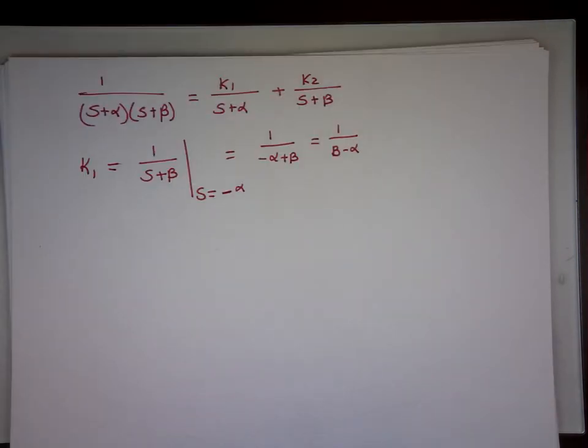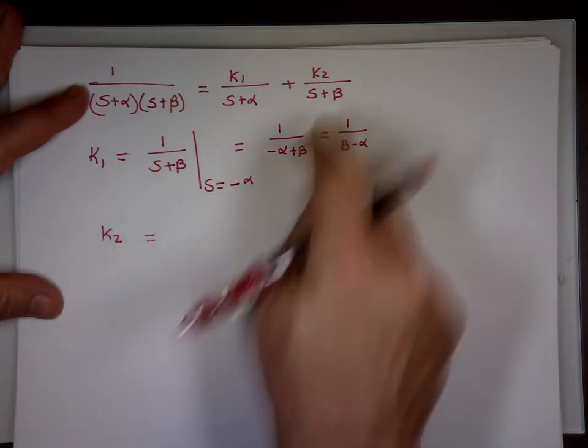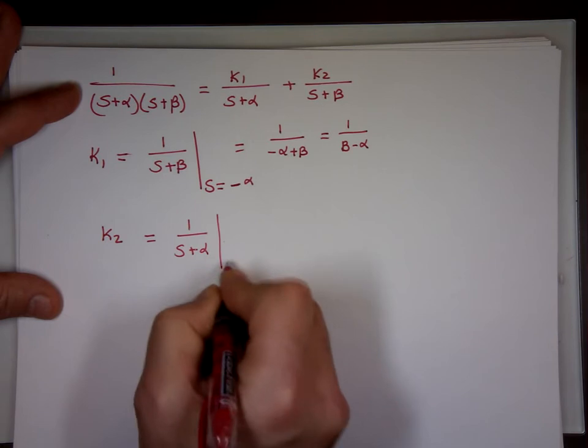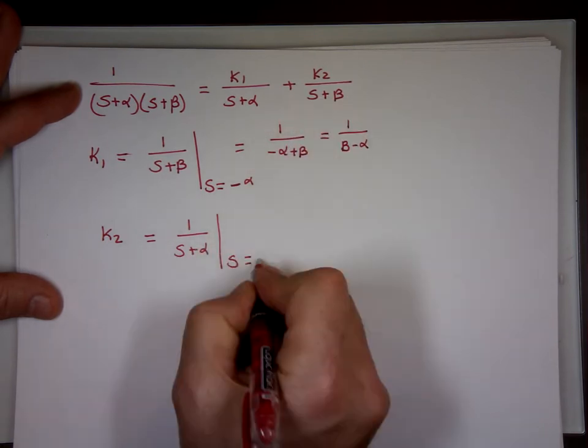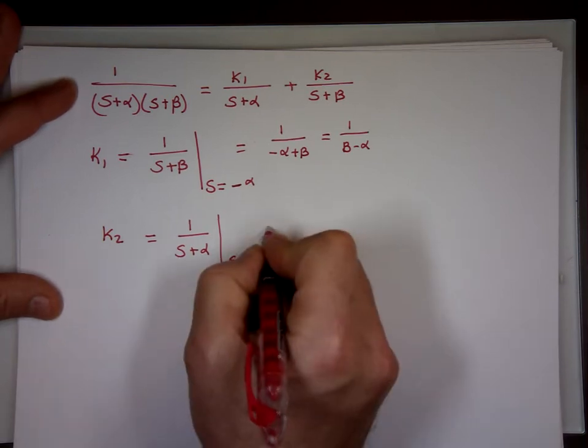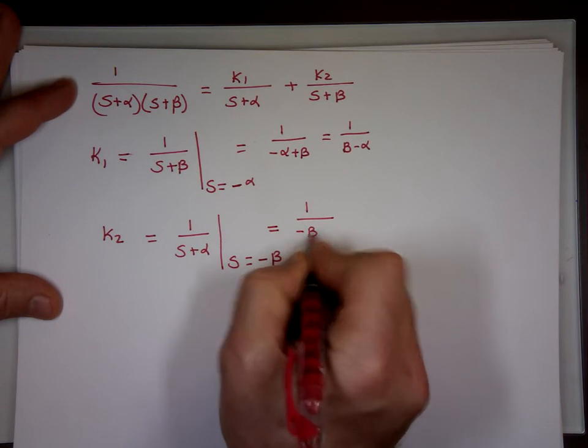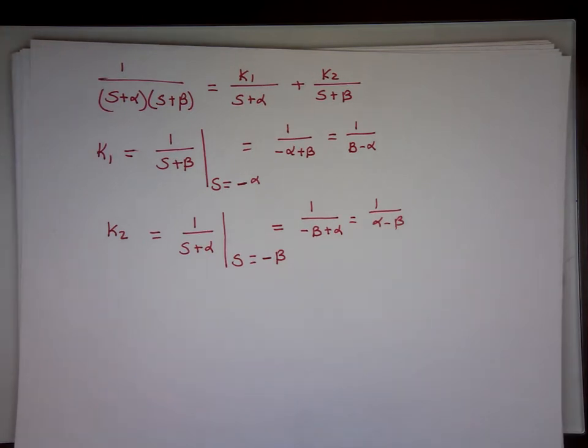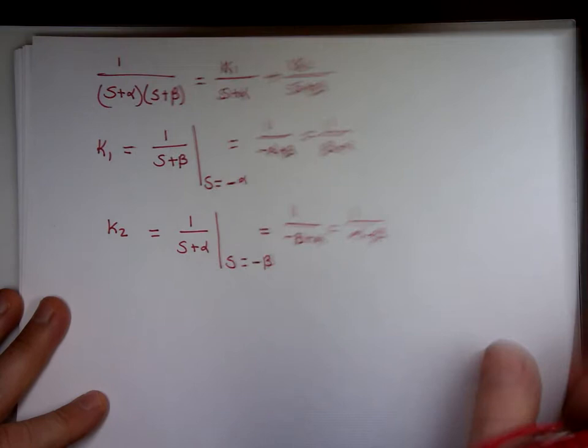K2. K2 sitting on top of S+β. So take S+β out of this one. You have 1 over S+α. When S equals, what makes this one zero? Negative β. I don't want to get you confused with it. But that's the simple one. So let me take some examples with numbers in them and see how that works.